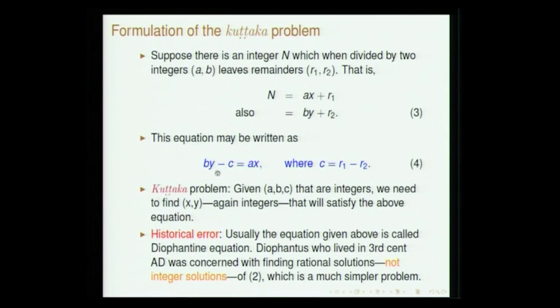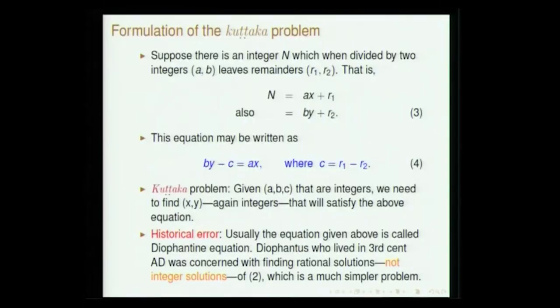This is an indeterminate equation because we have only one equation and two variables, so it is not trivial to find a solution in all cases. In certain cases we can guess the solution, but in most cases we need a systematic procedure. From the historical viewpoint, this equation has been referred to as the Diophantine equation, which is not quite correct — Diophantus was not even trying to find integer solutions; he was trying to find rational solutions, which are far easier.